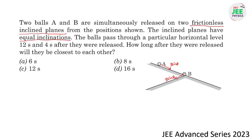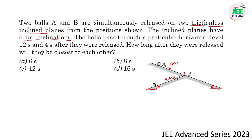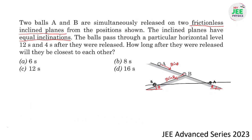I always request everyone to read each statement of the question carefully, as every statement gives you an idea to solve it. The inclined planes have the same inclination θ, so both accelerations are g sinθ. The balls pass through a particular horizontal level after 12 and 4 seconds after being released simultaneously — meaning B takes less time, 4 seconds, and A takes 12 seconds, but both are at the same horizontal level.